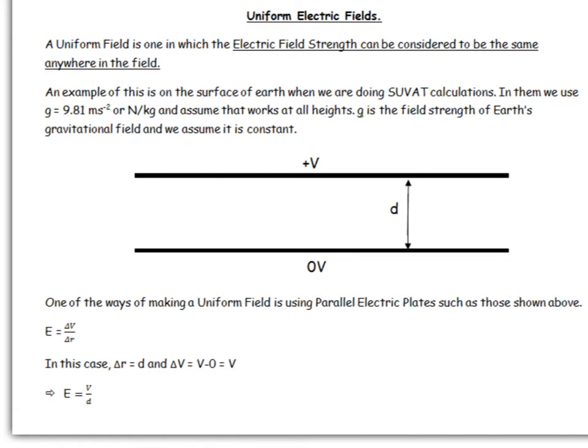In this video I'm going to talk about uniform electric fields and what makes them different to radial fields. A uniform field is one in which the field strength can be considered the same anywhere in the field. It's not just electric.